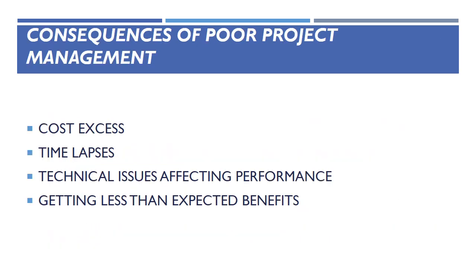These are the consequences of poor project management: cost excess, time lapses, technical issues affecting performance, and getting less than expected benefits. Without effective management, system development projects take longer to finish and frequently end up costing more than originally planned. The resulting information system is almost certainly less sophisticated technically and might not be able to offer the organization any advantage. The systems created by unsuccessful information initiatives are frequently not used as intended, or are not used at all.